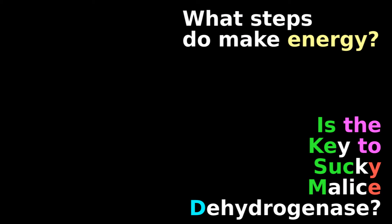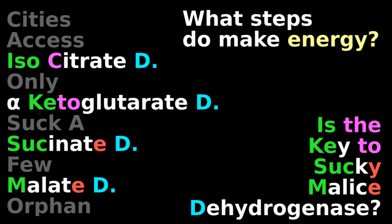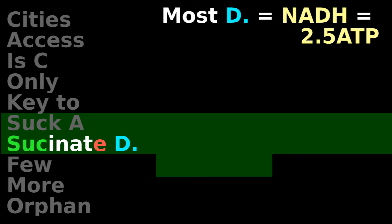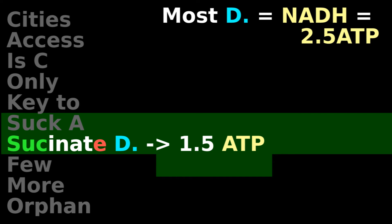Is the key to sucky malate dehydrogenase? Yes, and most of these four dehydrogenases make an NADH, which eventually becomes 2.5 ATP. Except for the succinate dehydrogenase, which is sucky because it only makes 1.5 ATP, due to the fact that it suckily only makes FADH2.